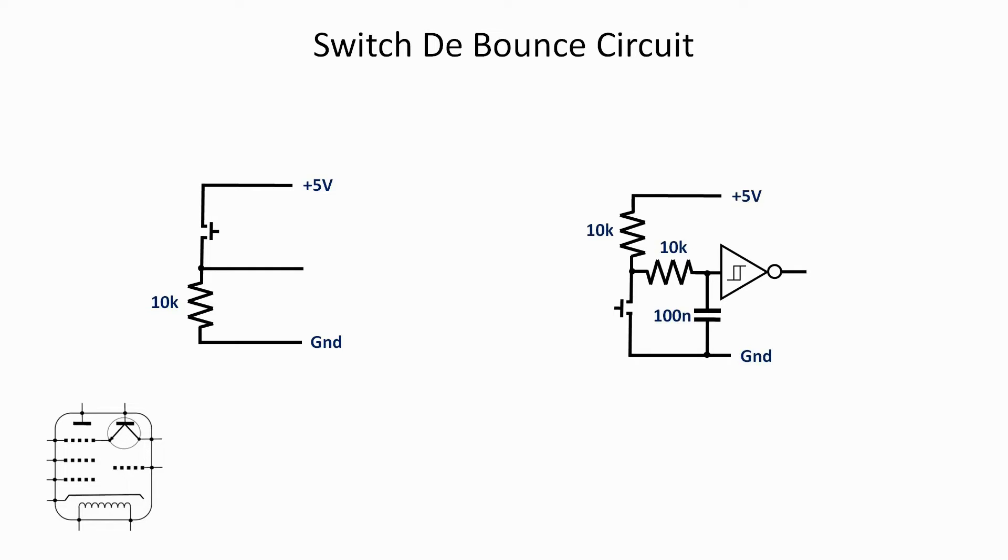Momentarily pressing the button grounds that center point, sends a negative going pulse into the input of the Schmidt trigger, but it also shorts out the 100 nanofarad capacitor via the 10k resistor. That capacitor will discharge, and that takes a great deal longer than the time that we're trying to get rid of in terms of noise. So that discharge cycle will actually mask the noise, and that's essentially how it works. I use the Schmidt trigger because it gives me a very positive going pulse.